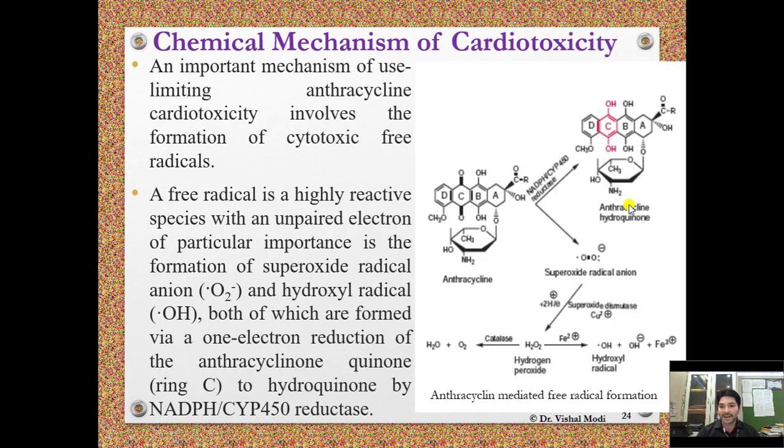Anthracycline is reduced to anthracycline hydroquinone with the help of NADPH and cytochrome P450 reductase enzyme. During the reduction process, superoxide radical anion is formed as a byproduct. This superoxide radical anion is converted to hydrogen peroxide by superoxide dismutase enzyme. The hydrogen peroxide is then converted to water and oxygen by catalase enzyme — this is the normal detoxifying mechanism available in our cells.